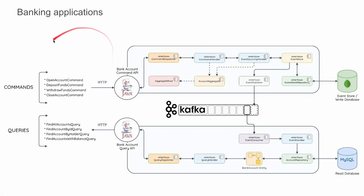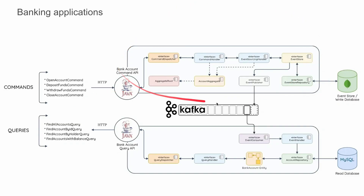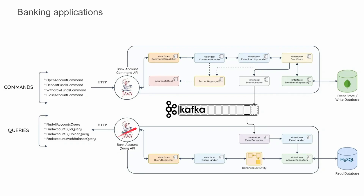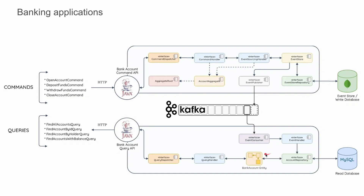Next is CQRS — Command Query Responsibility Segregation — combined with Event Sourcing. Most banking applications use this, where financial transactions are logged as events. Commands are write-heavy operations like 'open account' or 'withdraw funds,' while queries are read-heavy like 'find all accounts' or 'find balance' — and both are separated into different data pipelines. They are connected through Kafka, and event sourcing maintains a complete, auditable log — all state changes applied to an entity are captured, rather than just storing the current state.